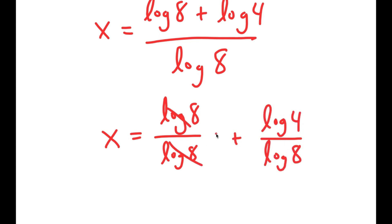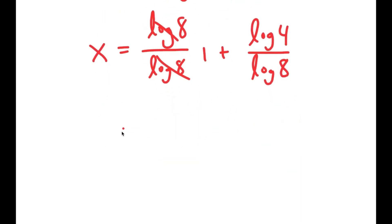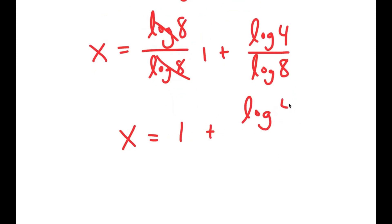This turns into log 8 over log 8 plus log 4 over log 8. These two cancel out to get 1, so I get x is equal to 1 plus log of 4 over log of 8.